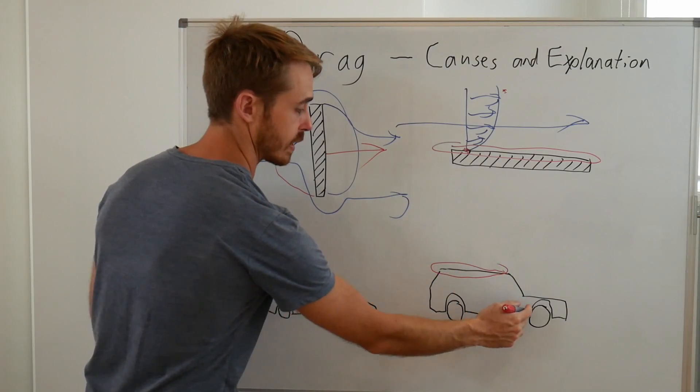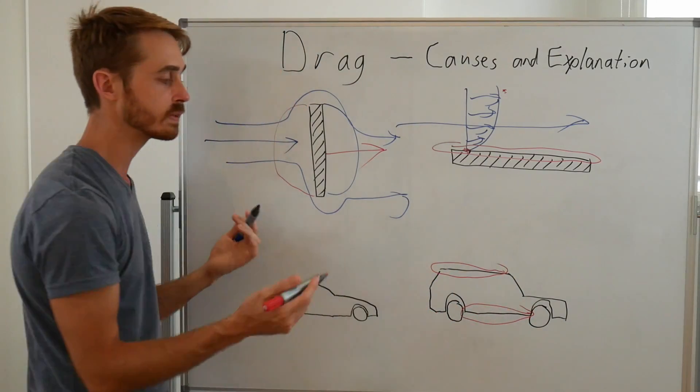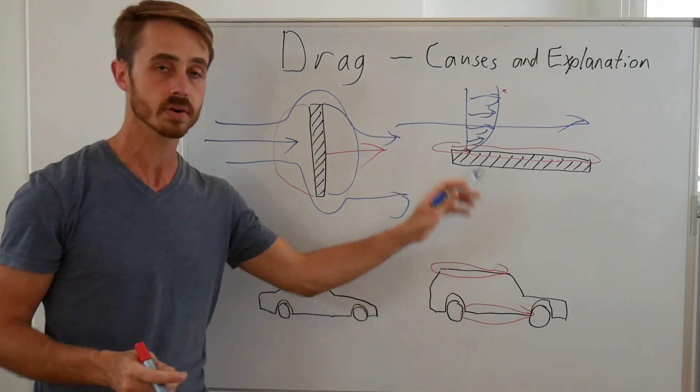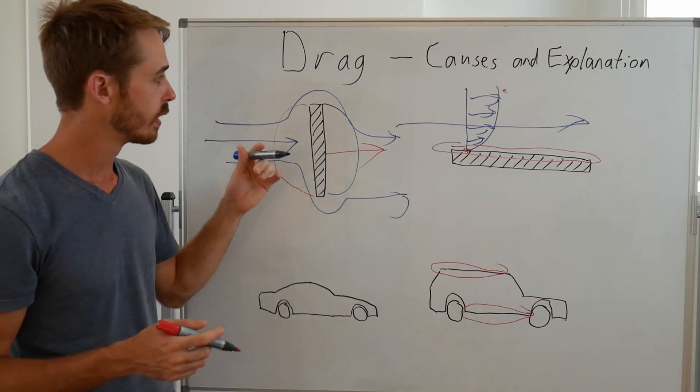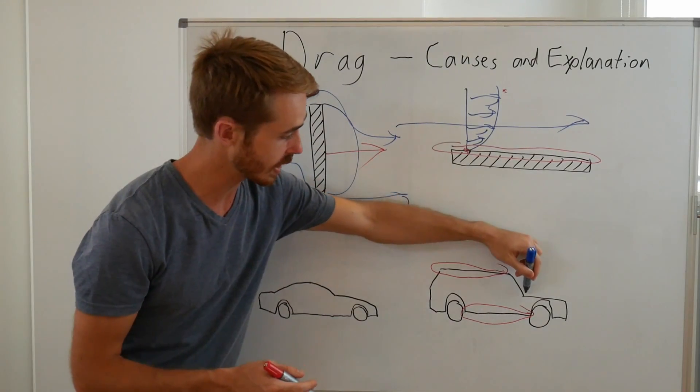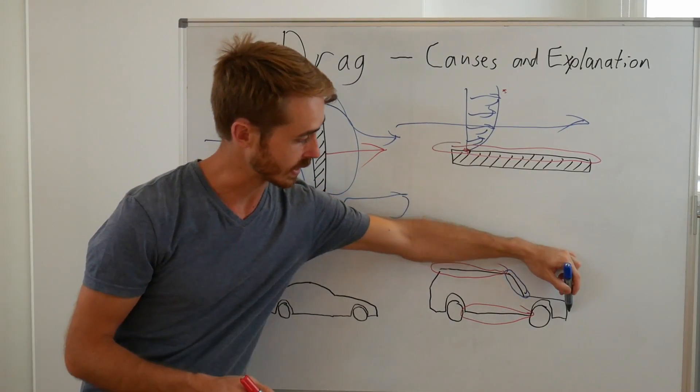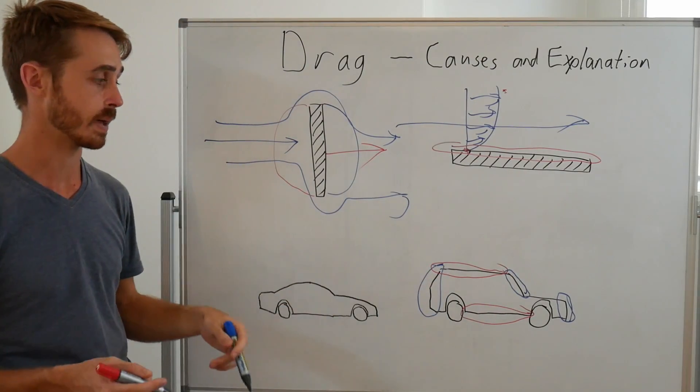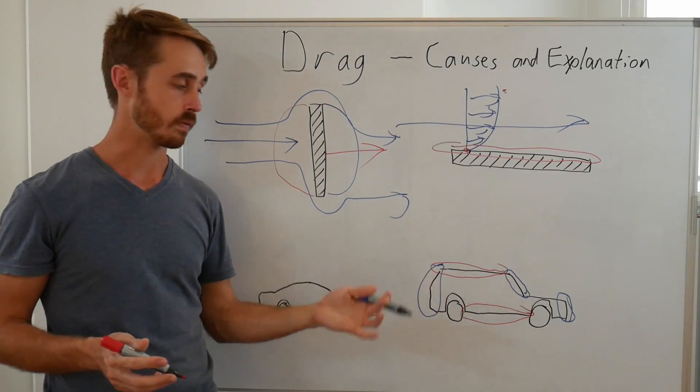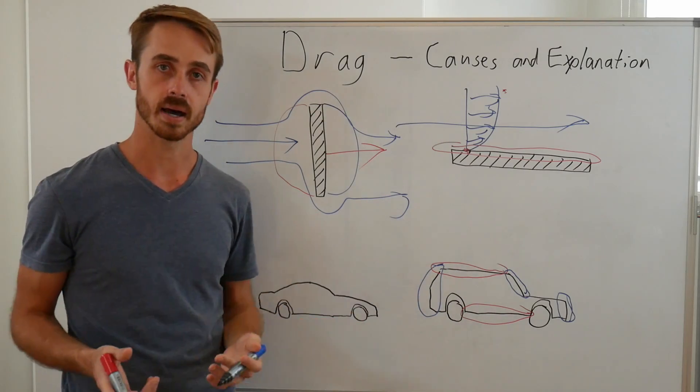So all these surfaces like that, the undertray there, only viscous drag can act on that because if you increase or decrease the pressure on it, it just provides an upwards or a downwards force. But we get pressure drag on regions like there, regions like there, and of course there. So these are our sources of our different drag regions on a car.